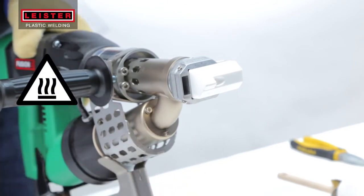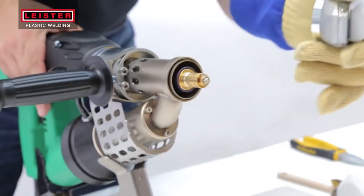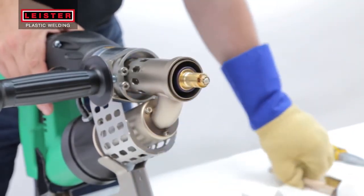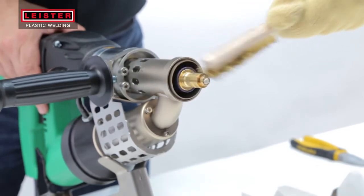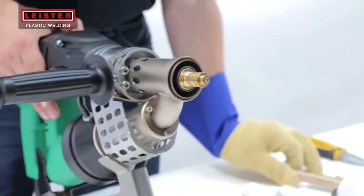When changing a welding shoe or if your welding work is finished, clean as much plastic as possible from the welding shoe prior to cool down. A brass brush works great for this and is also gentle on the parts being cleaned.